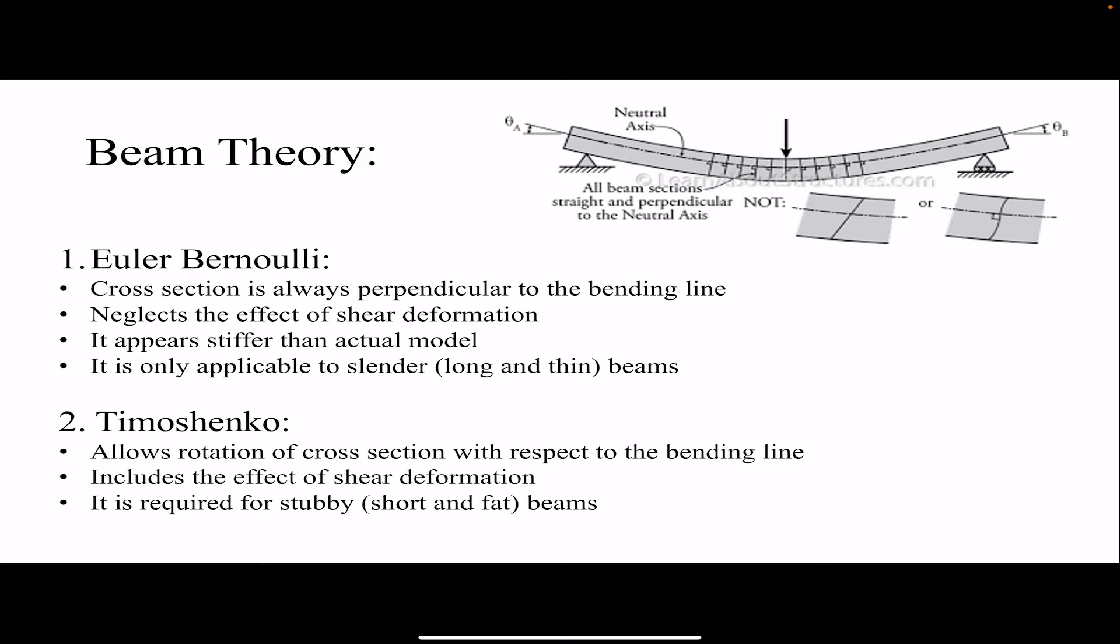Euler-Bernoulli is based on two assumptions. One is that the cross section is always perpendicular to the bending line. And the other assumption is that it neglects the effect of shear deformation. So all the deflection that we have in a beam is due to bending moment, not the shear force. When we have these two assumptions, we are introducing error into our system. That error causes our beam to be stiffer. So Euler-Bernoulli overestimates the stiffness of our beam, therefore it underestimates the deflection. And it's only applicable to slender beams, long and thin beams.